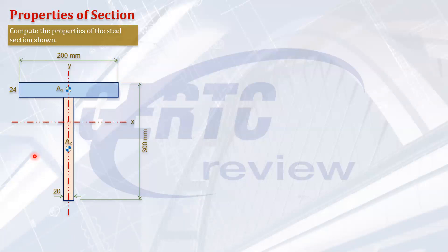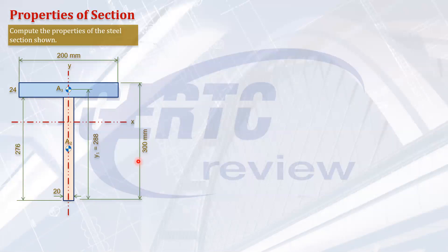We measure the centroid locations from the bottom of the section as our reference. For Area 1 (flange), the distance to its centroid is 300 minus half of 24, which is 300 minus 12, giving 288 mm. For Area 2 (web), the web depth is 300 minus 24 equals 276 mm, so its centroid is at half of 276, which is 138 mm from the bottom.